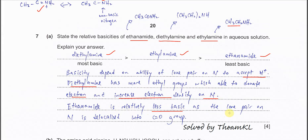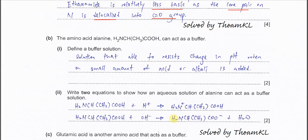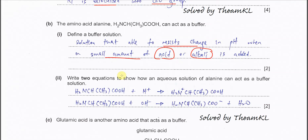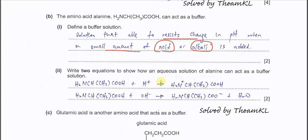Ethyl amide is relatively less basic as the lone pair on nitrogen is delocalized into the carbonyl group. Part B: the amino acid alanine can act as a buffer. Define buffer solution — this is a solution able to resist change in pH when a small amount of acid or alkali is added. Two marks.